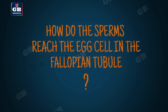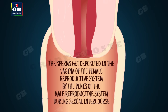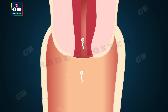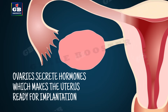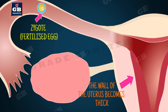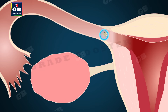How do the sperms reach the fallopian tube? The sperms get deposited in the vagina during sexual intercourse. The sperms travel towards the fallopian tube and finally reach the egg cell and fertilize it. The hormones secreted by the ovaries prepare the uterus to receive and nurture the growing embryo. The walls of the uterus become thick and richly supplied with blood to nourish the growing embryo.